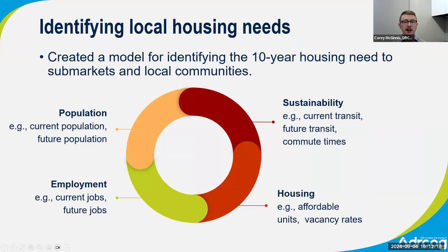Here's a high-level summary of the criteria used to distribute our 10-year regional housing need down to sub-markets and local communities. There are current metrics used to distribute current need and future metrics for future need. These include population and employment — directly connected to housing demand in Dr. Cog's Small Area Forecast — multimodal accessibility based on current and planned regional transit network, short commute times, and sub-regional housing affordability and vacancy rates. Only population, employment, and transit metrics are used for local need distribution, while all metrics factor into the sub-market distributions, since data for other metrics is not available at the local community level.